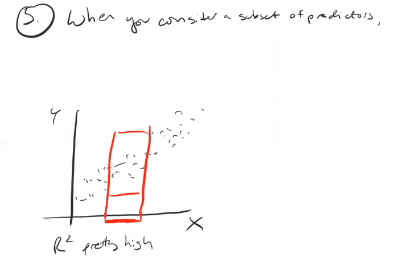So my question is, when I zoom in in this way, focus on a subset of the data based on x, what's going to happen to r squared?